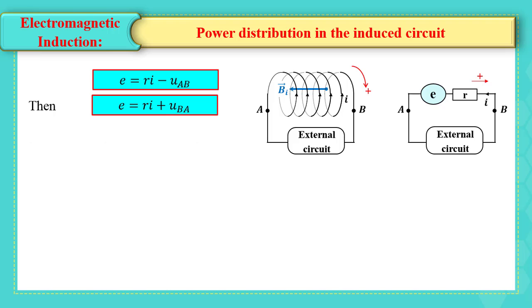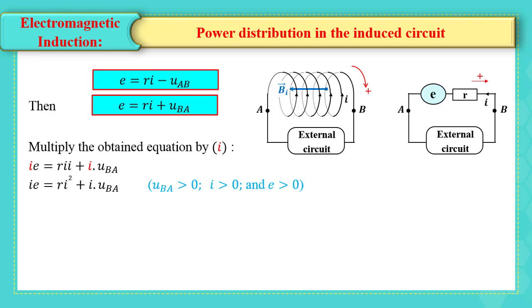Multiply the obtained equation by I, then the equation becomes IE equals Ri squared plus I multiplied by UBA, where UBA greater than zero, I greater than zero, and E greater than zero. This equation can be written in the following form.